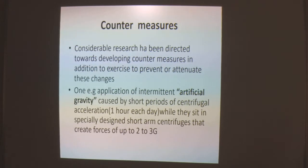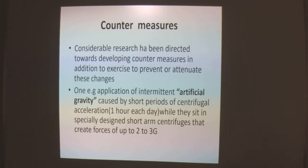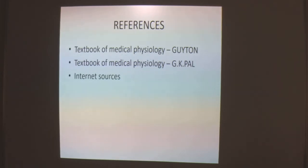Considerable research has been directed towards developing countermeasures in addition to exercise to prevent or attenuate these changes. For example, application of intermittent artificial gravity caused by short periods of centrifugal acceleration — that is 1 hour each day — while sitting in specially designed short-arm centrifuges that create forces up to 2 to 3G. This can help astronauts reduce the stress of microgravity. This concludes today's lecture on Space Physiology.